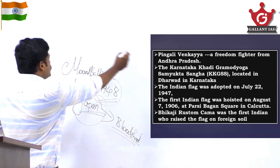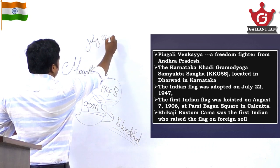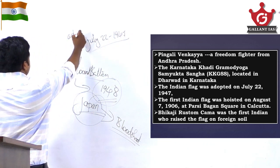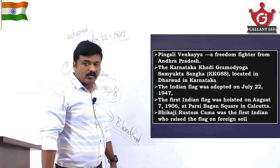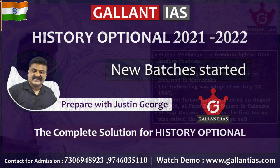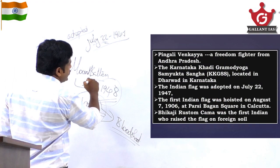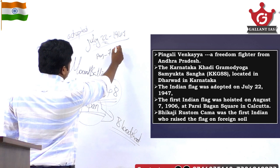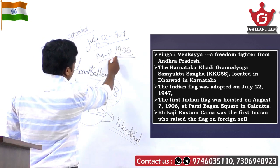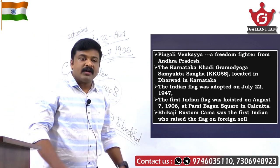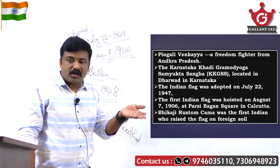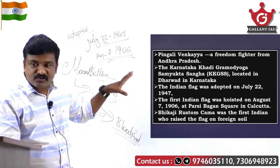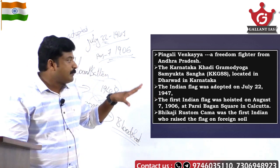The flag was first adopted on July 22nd, 1947, during a meeting of the Constituent Assembly — the constitution-making body. The flag was first hoisted on August 7th, 1906, at Parsee Bagan Square, Kolkata. UPSC can make tricky statements by changing the place — for example, saying it was in Mumbai, Maharashtra, or Chennai — so remember: first hoisted on August 7th, 1906, at Parsee Bagan Square, Kolkata.